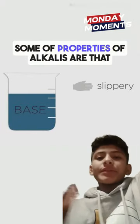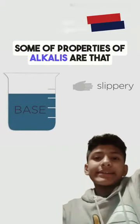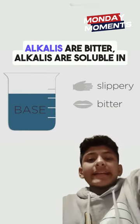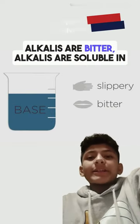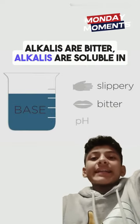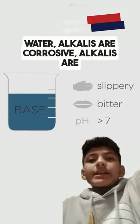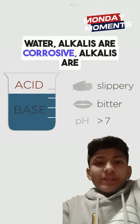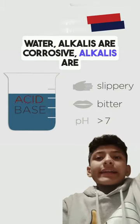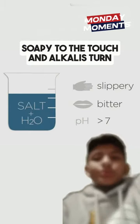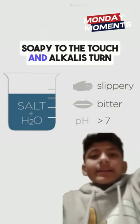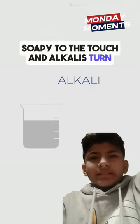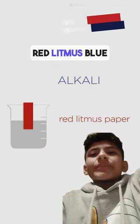Some of the properties of alkalies are that alkalies are bitter, alkalies are soluble in water, alkalies are corrosive, alkalies are soapy to the touch, and alkalies turn red litmus blue.